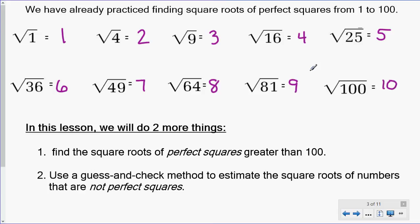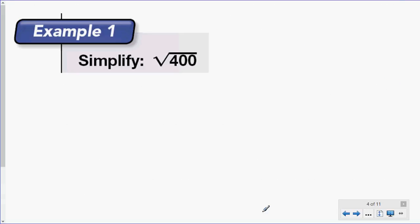These are perfect squares because their square root is a whole number. Any other number between 1 and 100 is not a perfect square. For example, the number 30 is not a perfect square. The square root of 30 is not a whole number. But today we are going to do two things: find the square roots of perfect squares greater than 100, and use a guess and check method to estimate the square root of numbers that are not perfect squares.